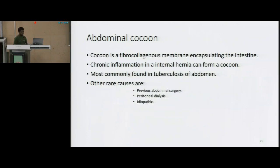The dilemma of the case — an abdominal cocoon. What is an abdominal cocoon? An abdominal cocoon is a fibrocollagenous membrane encapsulating the small intestine, and it forms because of chronic inflammation. An internal hernia can also form a cocoon inside. This is most commonly found in tuberculosis of the abdomen. Other rare causes of abdominal cocoon formation include previous abdominal surgeries, peritoneal dialysis, and it could be idiopathic as well.